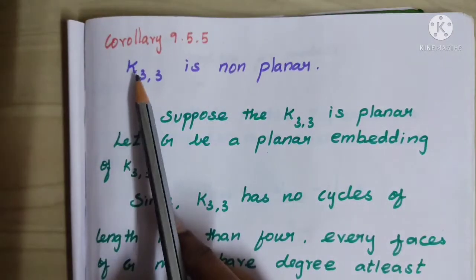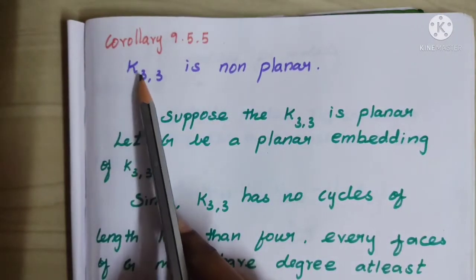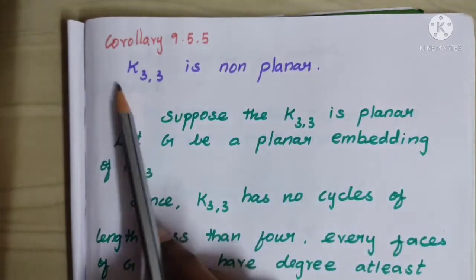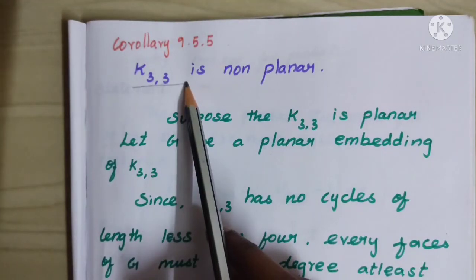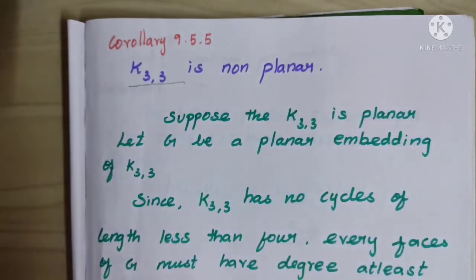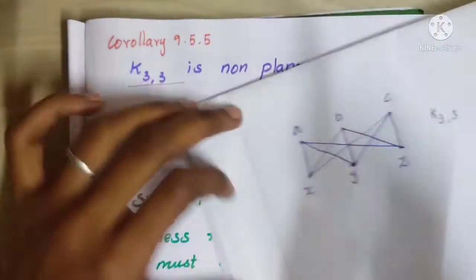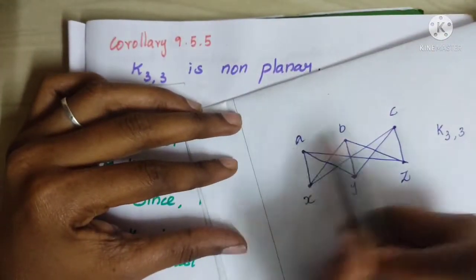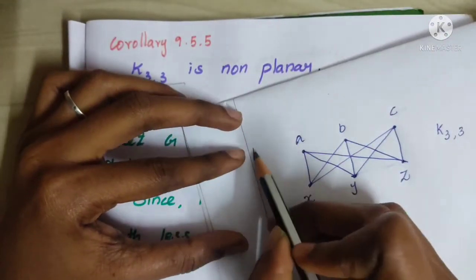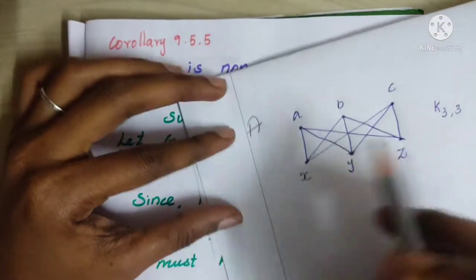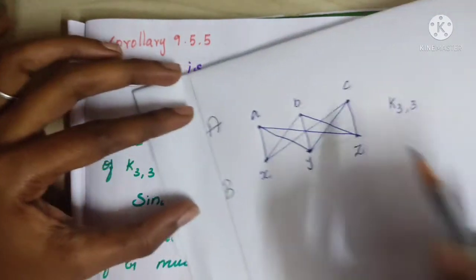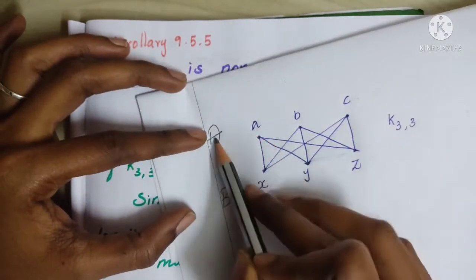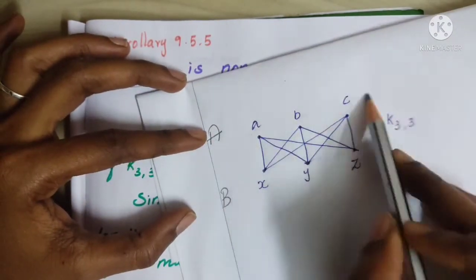The question is: K3,3 is non-planar. K3,3 is denoted by a Bipartite Graph. A Bipartite Graph has two partitions. We have partition A with vertices A, B, C.